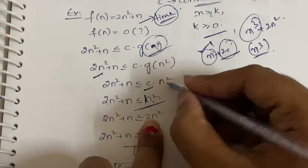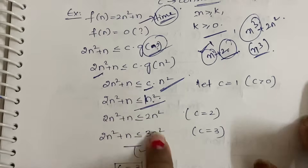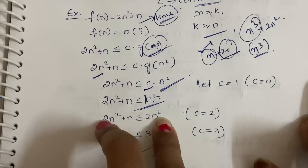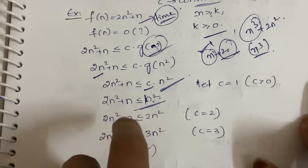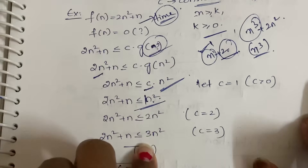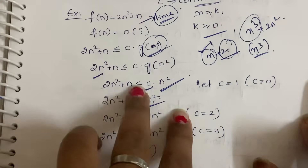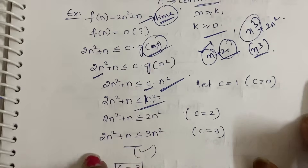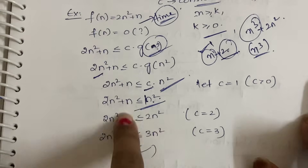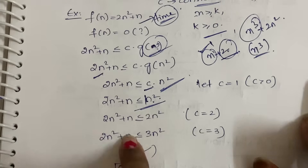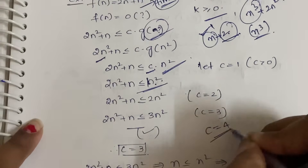If c = 2: 2n² + n ≤ 2n². Both sides have 2n², but adding n makes the left side strictly greater, so c = 2 also does not work. If c = 3: 2n² + n ≤ 3n². Since 3n² > 2n², and adding n still keeps the inequality satisfied, c = 3 works.